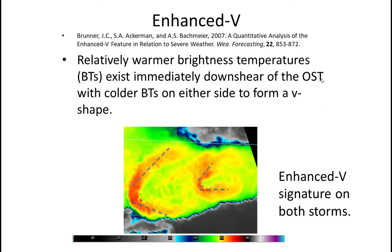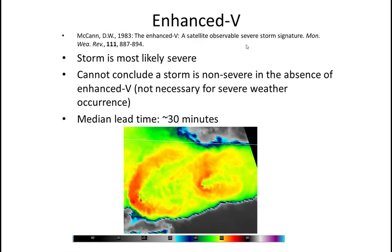Next, let's talk about the enhanced V signature, which we see in IR imagery. There have been many studies on the enhanced V. The signature we are looking for is relatively warmer brightness temperatures that exist immediately downshear of the overshooting top, with colder brightness temperatures on either side forming a V shape. Both highlighted storms have an enhanced V signature. From past studies we can conclude the storm is most likely severe, though we cannot conclude a storm is non-severe in the absence of the enhanced V — it is not necessary for severe weather occurrence.